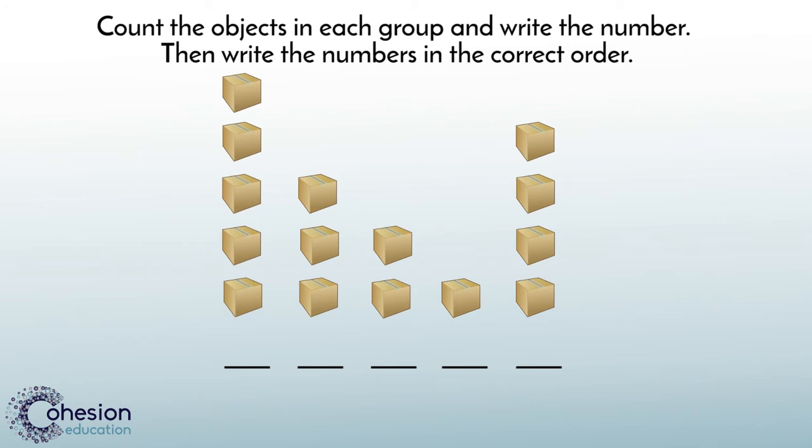In this example, students are shown existing towers of boxes 1 through 5 in an incorrect order. Students would have to count the boxes and write the number below each group.